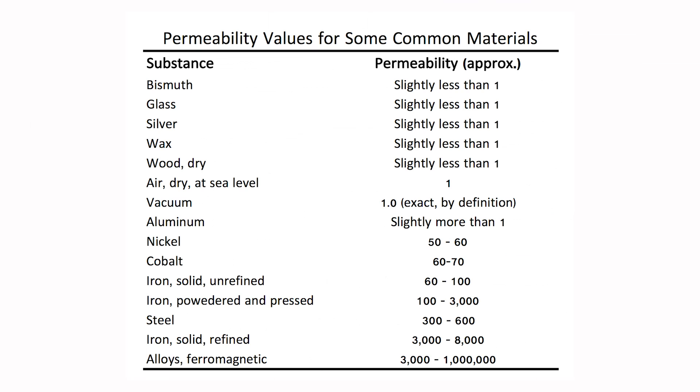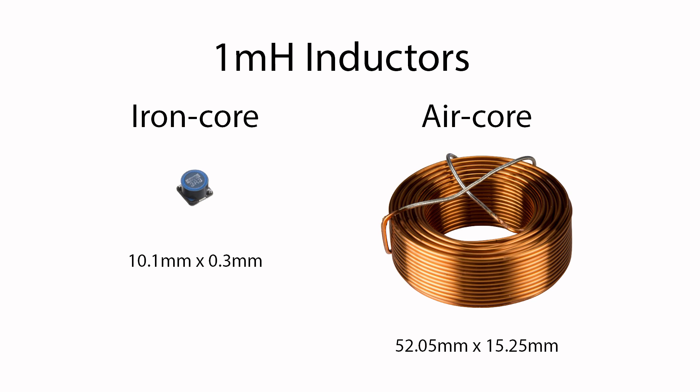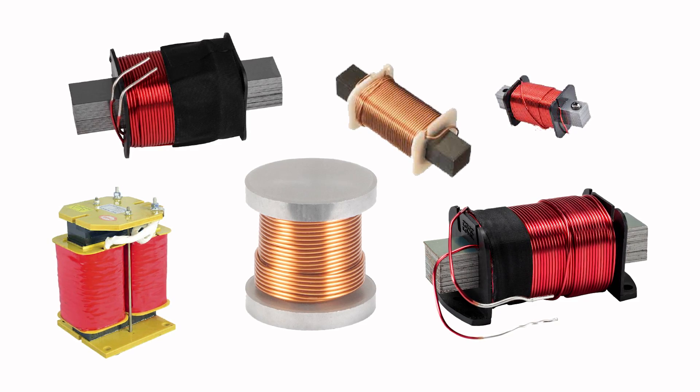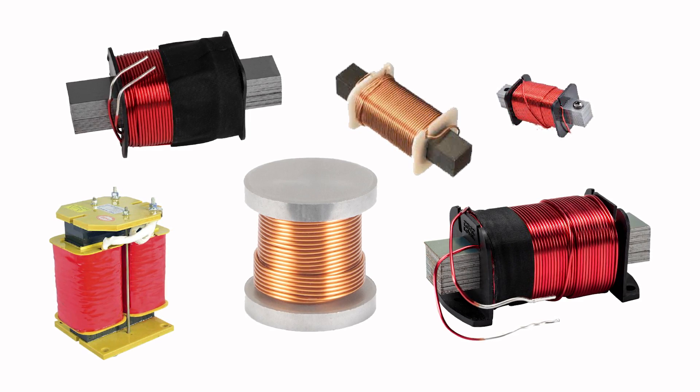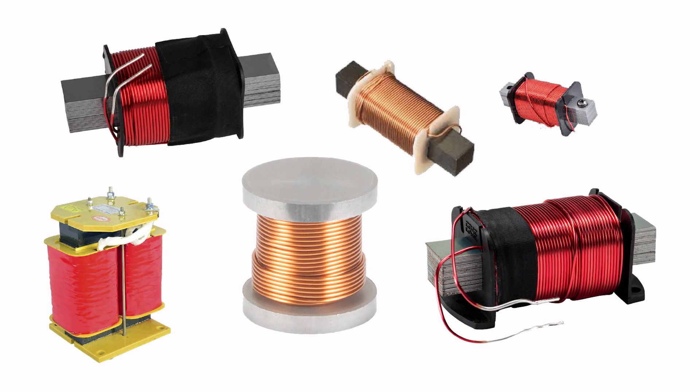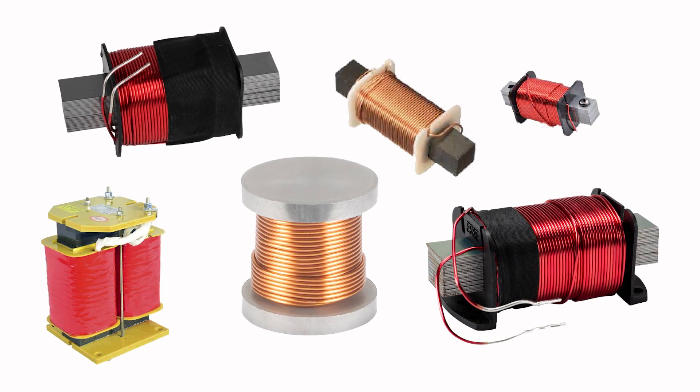Iron core inductors have a core made up of, you guessed it, iron. Iron, having a relatively high permeability rating, is capable of increasing inductance by a factor of 100 to 1 million times that of air. This requires fewer coil turns to achieve the same inductance, allowing these inductors to be much smaller. A downside of this type of inductor is that iron cores can experience significant power losses when operated at higher frequencies, so they are better suited for low frequency applications such as audio and DC power supply circuits.